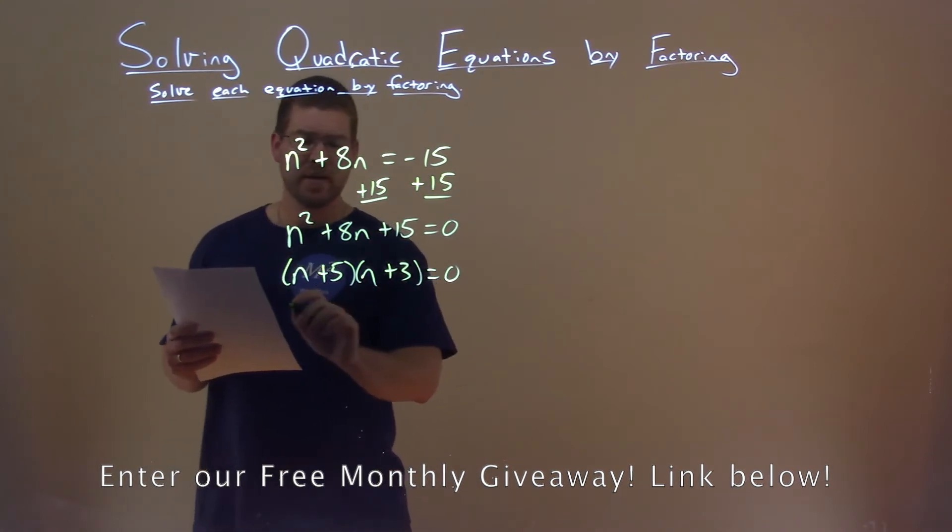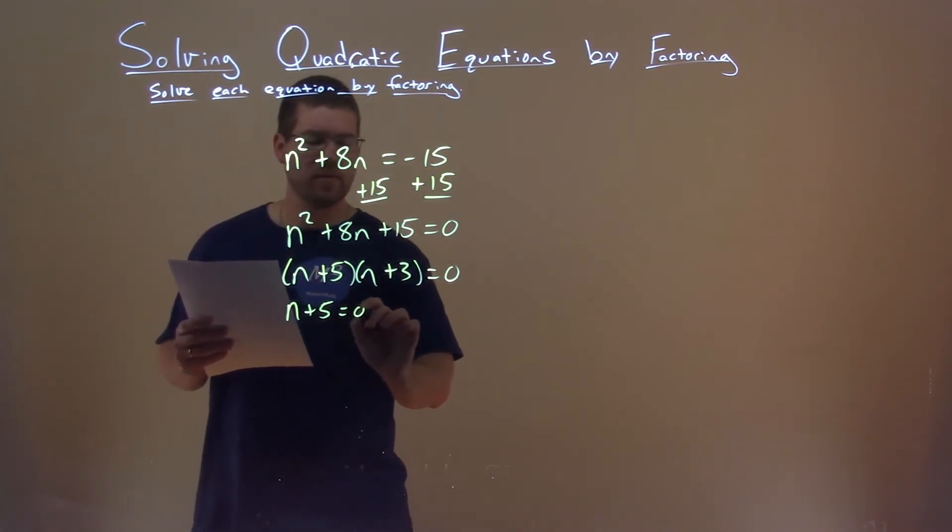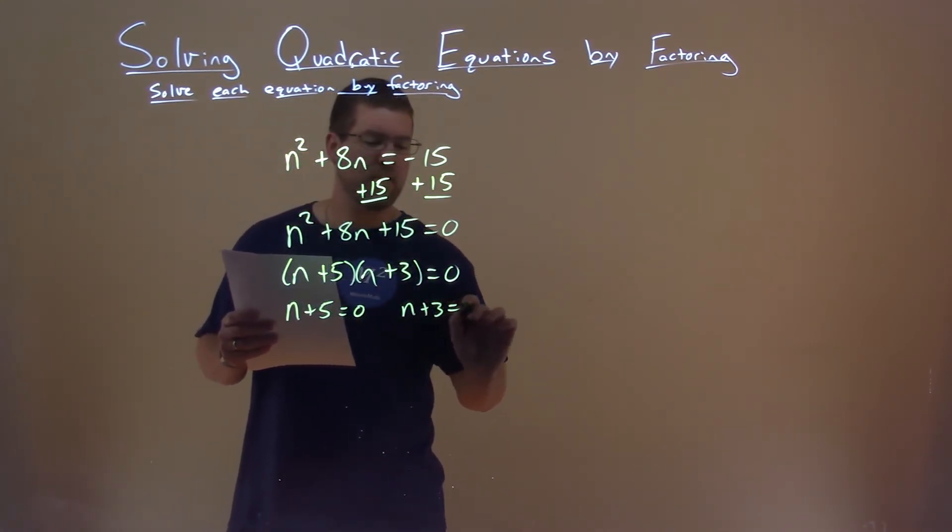So now we have this factor. We can set both parts equal to zero and solve for n.